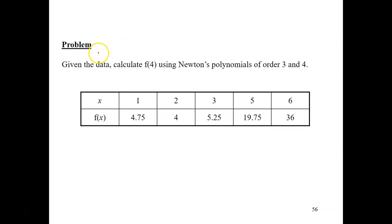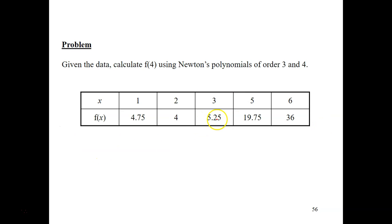In this video, let's discuss one problem and how to solve it. This is a data point and the question asks us to calculate f(4) using Newton's polynomials of third order and fourth order. First and foremost, when you have a set of data points you need to reorder the points as centered and as close to your unknown as possible. In this case the unknown is x equals to 4.